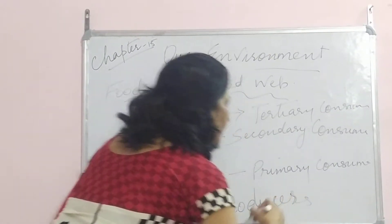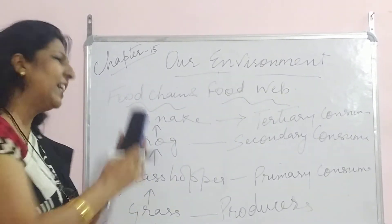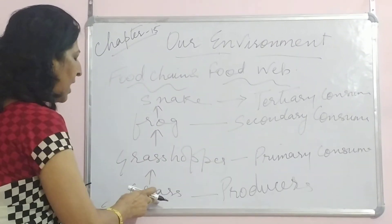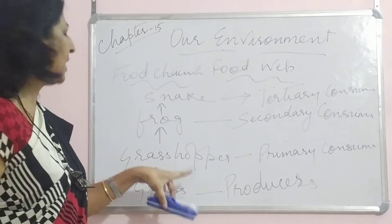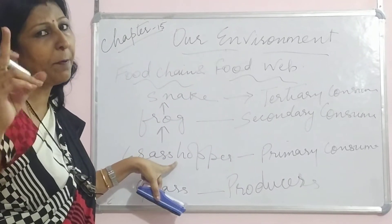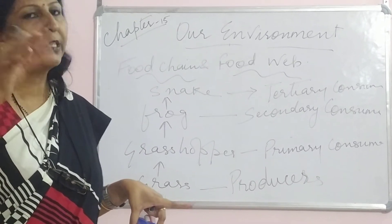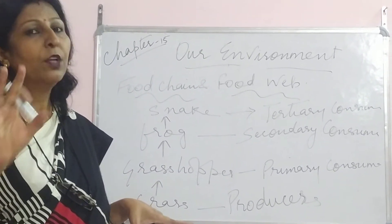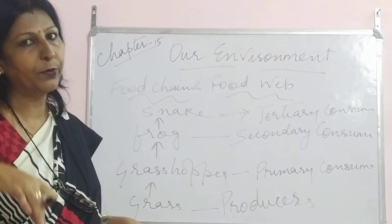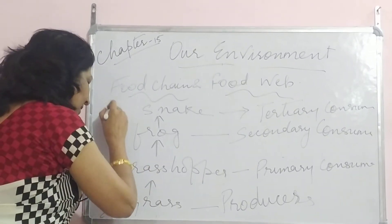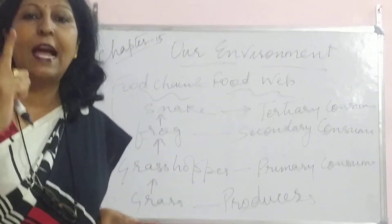So producers are at the first level. We can take any example. Grass can be taken up by deer — that is also one food chain. Deer is eaten by a tiger, so deer is the primary consumer and tiger is the secondary consumer. After the tiger dies, it will be decomposed. So in this chain it is: producer, primary consumer, secondary consumer, and then decomposers.